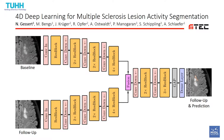Hello, my name is Nils Gessart. In our work we address the problem of multiple sclerosis lesion activity segmentation. Here we try to predict how much lesions in the brain have changed in between two scans that have been taken several months apart.